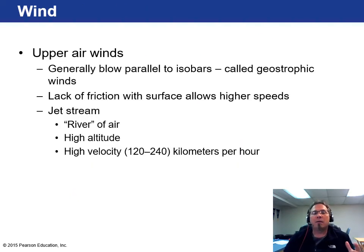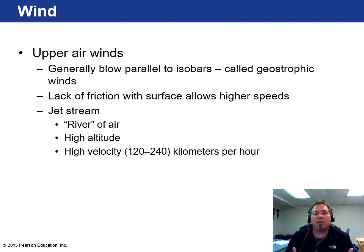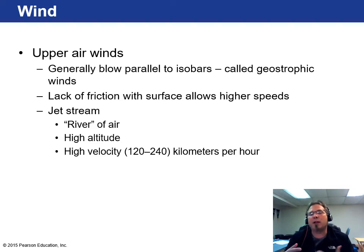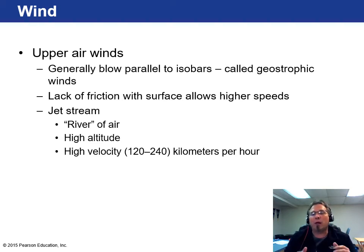In the upper atmosphere — not down near the surface — winds blow parallel to isobars, called geostrophic winds, because there's no friction up there. This is where we get the jet stream. While way up in the air, the jet stream often dictates our weather. In winter, when it plunges down from the north, we get super cold days as it brings cold air down from Canada. It's a river of air at high altitude, moving anywhere from 120 to 240 kilometers per hour, and jet airliners often use it to save fuel on long journeys.